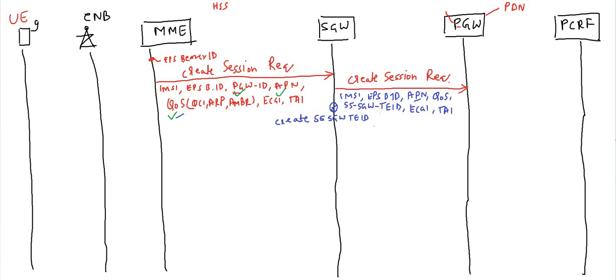Once PGW receives the S5-SGW-TEID, PGW will draw a bearer towards SGW. This is the S5 bearer. Through this bearer, PGW can share IP packets towards SGW. The Create Session Request messages are the signaling part, while this bearer is the user plane part — the path through which real data can be transferred.